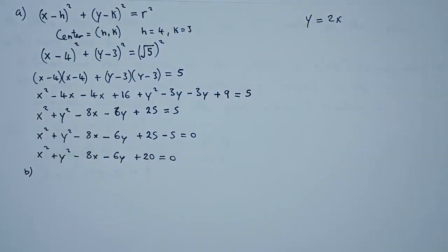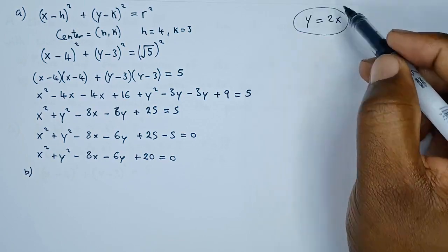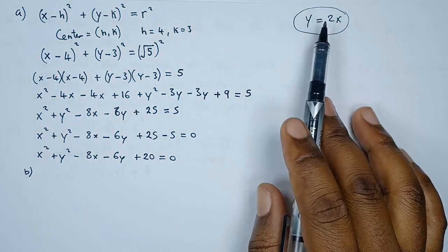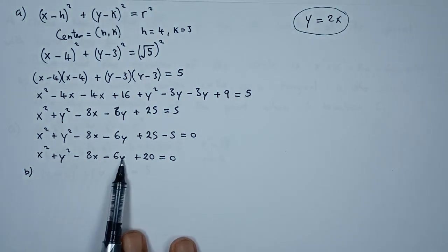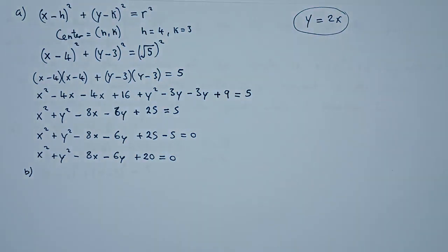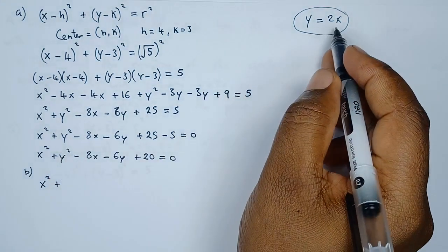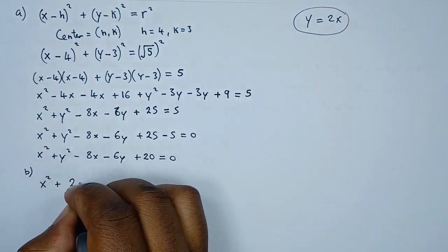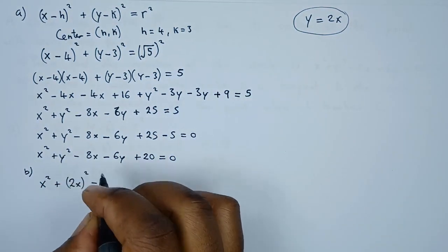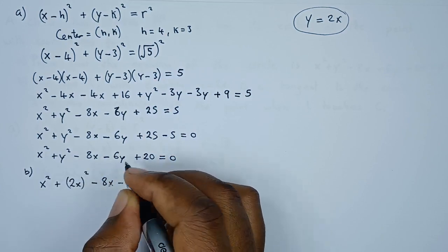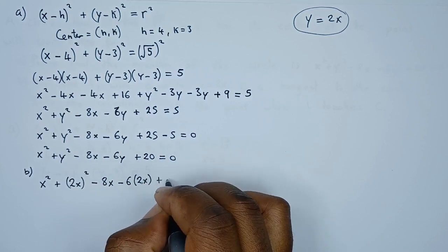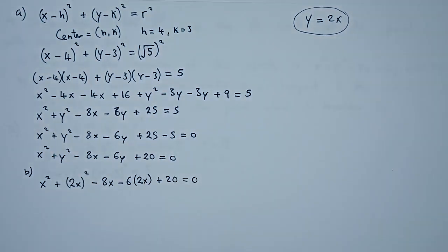The tangent equation y equals 2x already has y as the subject. Wherever there is y in the circle's equation, we substitute 2x. So we get: x squared plus (2x) squared minus 8x minus 6(2x) plus 20 equals 0.